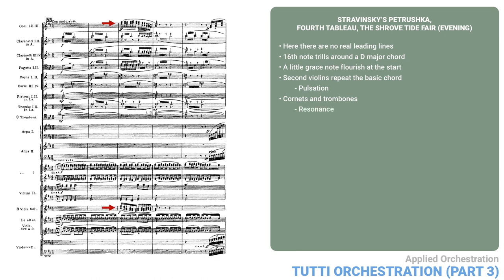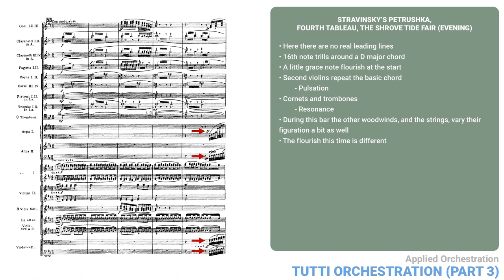In the third bar, the oboes and the three solo violas have a little rising and falling flourish. Note that the oboes ascend and then descend, whereas the viola solos do the opposite. Note also that during this bar, the other woodwinds and the strings vary their figuration a bit as well. The same thing happens again two bars later, but the flourish this time is different. Here on the second beat, it's made of oboes and harp going up a D major arpeggio, with harp 2 and cellos doing a rising scale. This creates extra energy. This in turn is repeated as well.